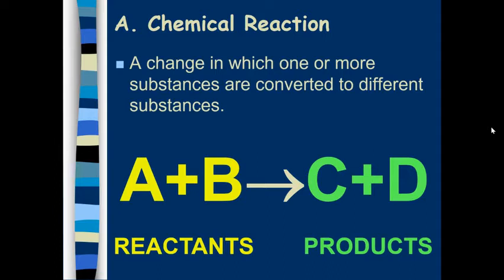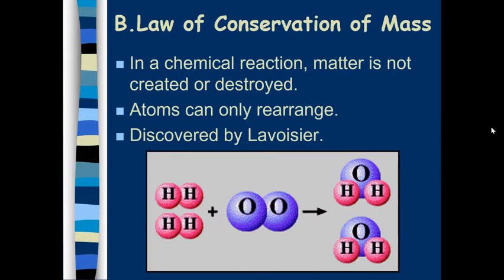The reactants are on the left side of the arrow and the products are on the right side of the arrow. And the chemical reaction, as it says, is a change in which one or more substances are converted to different substances. One of the most important chemical laws of chemical reactions is this law of conservation of mass. In a chemical reaction, matter is not created or destroyed. I'm sure you've heard this before. Atoms can only rearrange, and this was discovered by this guy named Antoine Lavoisier.